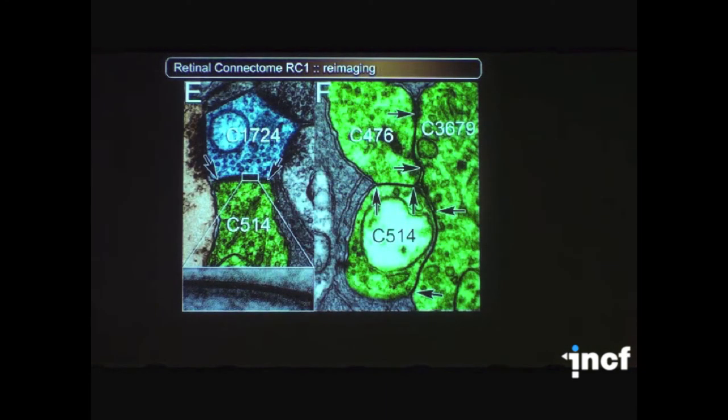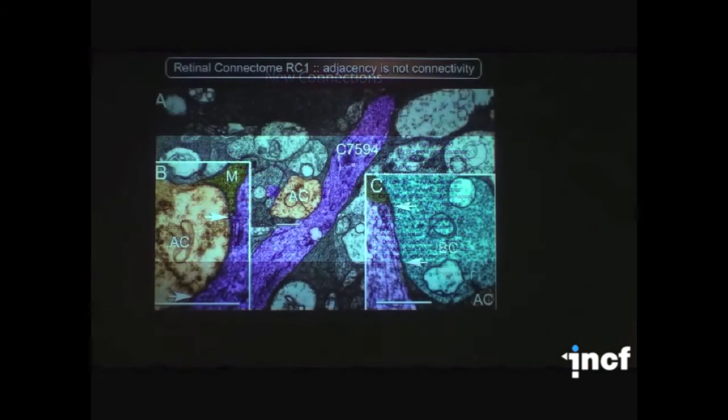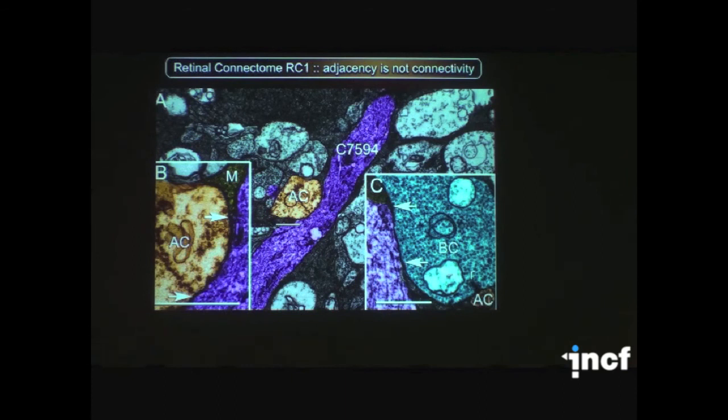We can re-image to view gap junctions. I'll skip this over. An important point is that adjacency is not important in the retina because most cells will pass right by each other and never make any contacts. Only synapses, only gap junctions matter.